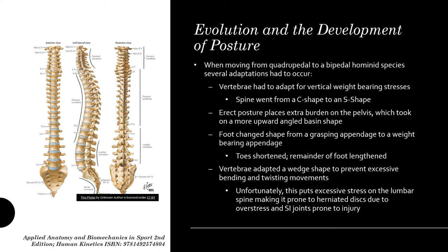This meant that our spine went from a C-shape — like what you'd see in a cat or dog — to an S-shape, giving us curves that create support. An erect posture also places extra burden on the pelvis, so it developed a more upward-angled basin shape. Our foot shape changed from a grasping appendage to a weight-bearing one, with shortened toes and a lengthened foot. Finally, our vertebrae took on a wedge shape to prevent excessive bending and twisting as we stood upright.